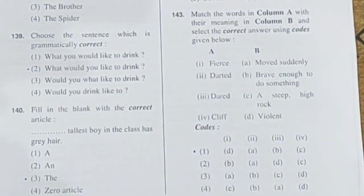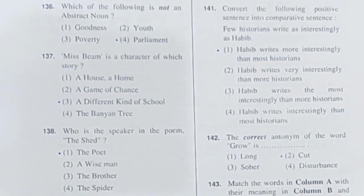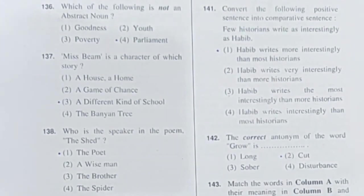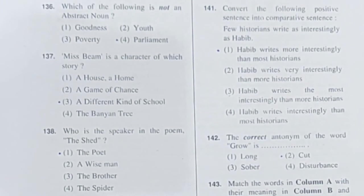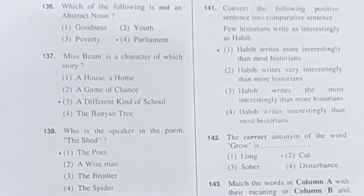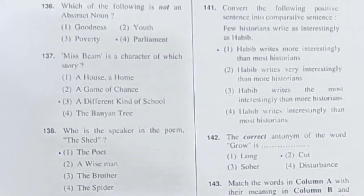Question 136: Which of the following is not an abstract noun? Options: goodness, youth, poverty, parliament. Goodness, youth, and poverty are all abstract nouns. Parliament is not an abstract noun. Option 4 is correct.